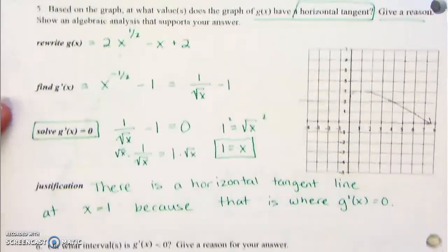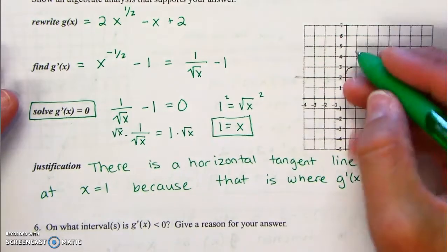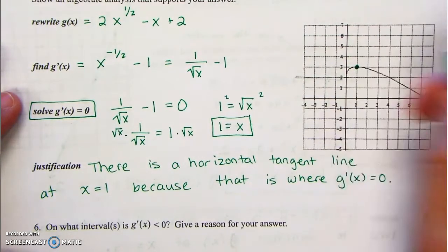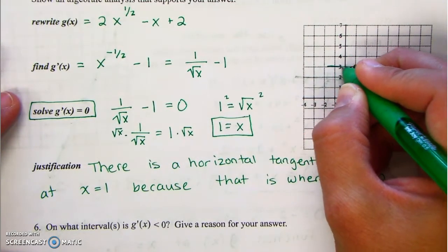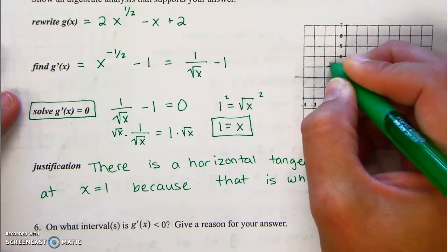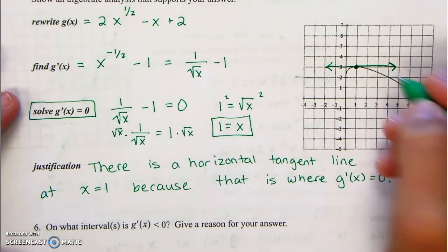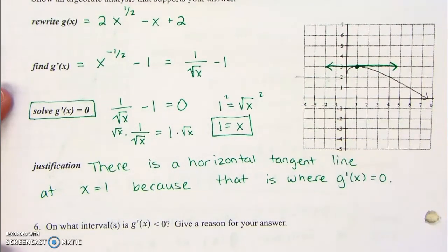The derivative equals 0 there. Does our graph confirm that at x equals 1? Would you call that a relative max or a relative minimum? It's a relative max, and you agree the tangent line is horizontal there. Fantastic.